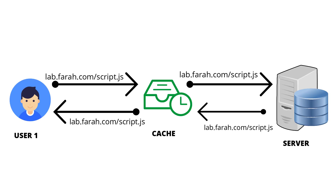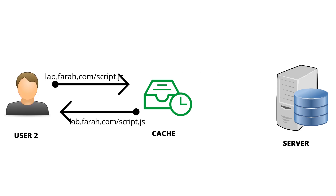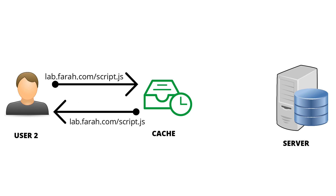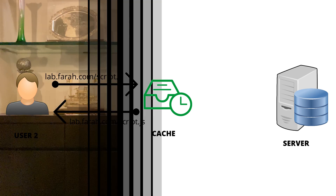So what is a cache? Developers configure web caching functionalities to their application, which stores files that are frequently requested by users. When a user requests one of those files, it is served directly from the cache and there's no need for the server to deal with each request over and over again. This helps in reducing load for the server and also helps users get their content faster.